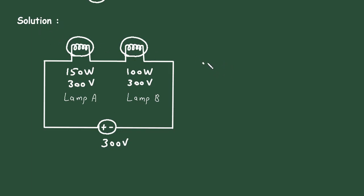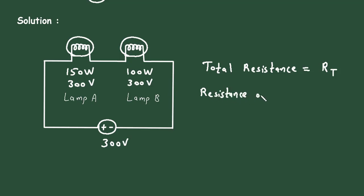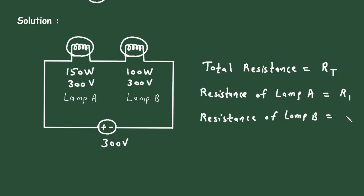Now its total resistance — let us say its total resistance is given by RT. The total resistance will be the combination of the resistance of lamp A and the resistance of lamp B. Let us say the resistance of lamp A is equal to R1 and resistance of lamp B is equal to R2. So its total resistance will be RT = R1 + R2.